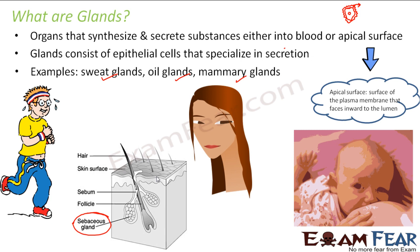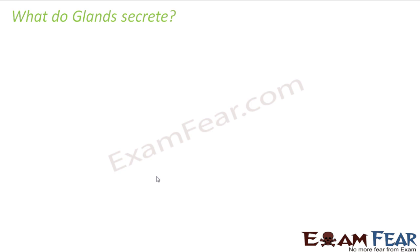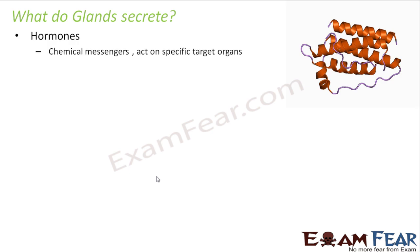So glands are organs that synthesize materials and secrete them — either directly into the blood or onto the apical surface of cellular components. What do glands secrete? They secrete hormones. Hormones are chemical messengers that act on specific target organs — they know where to go, travel to that specific organ, and act on it.